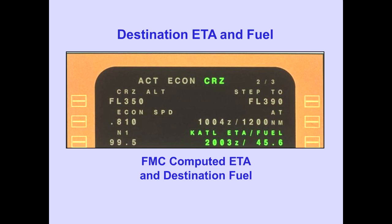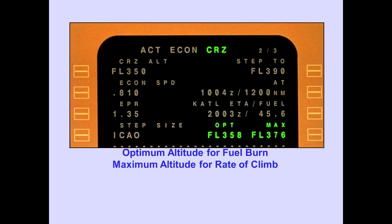The destination ETA fuel line displays FMC computed ETA and destination fuel based on following the entered VNAV profile. The optimum and maximum altitudes represent the optimum altitude for fuel burn and the maximum altitude for rate of climb.